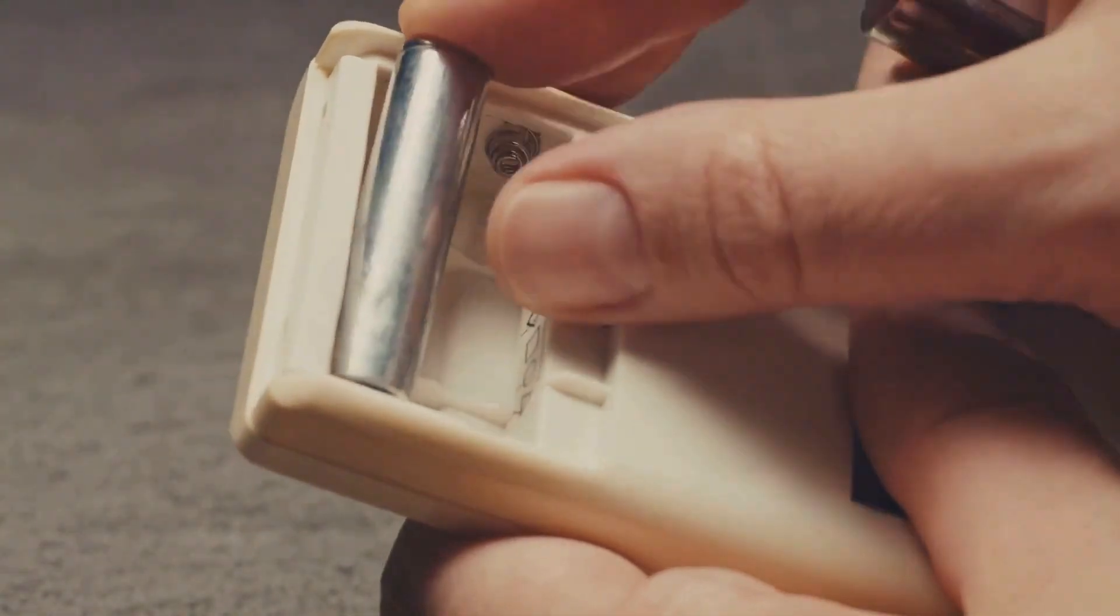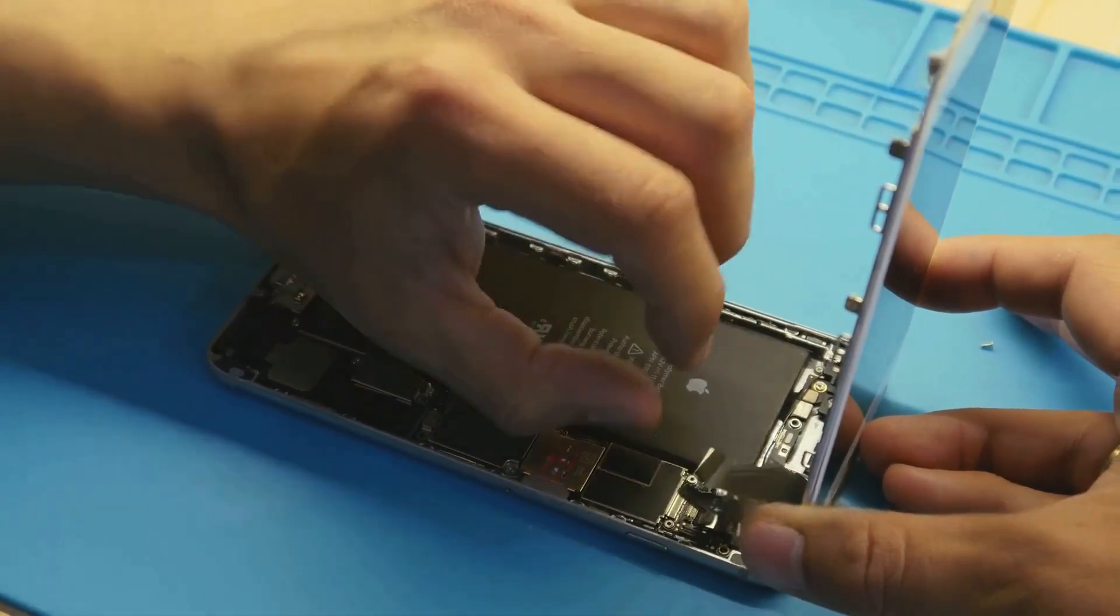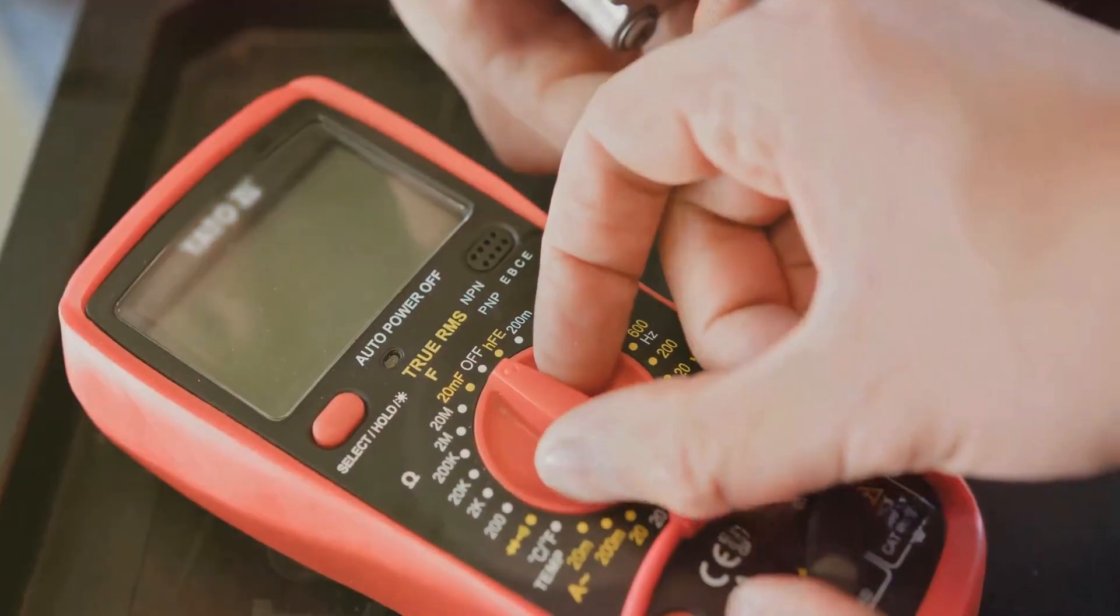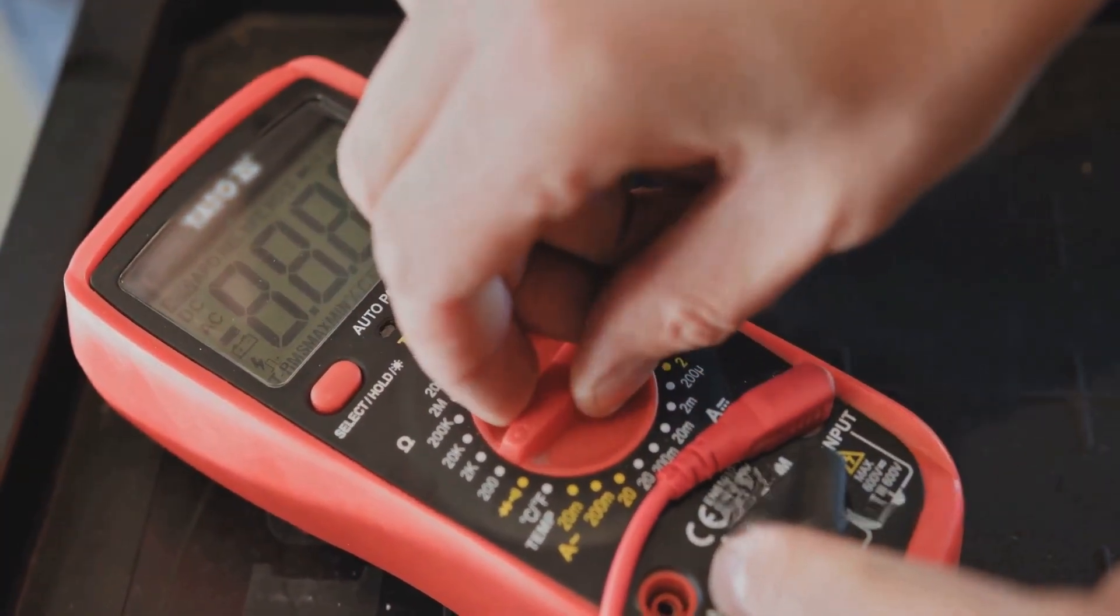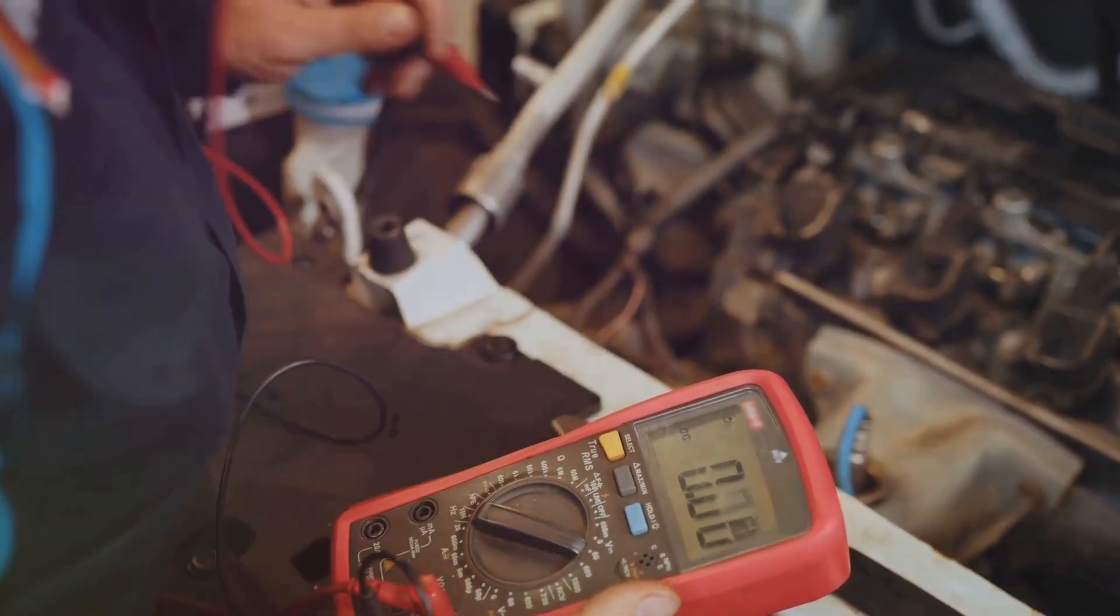Open the back cover of your multimeter and replace the old batteries with fresh ones. Make sure the new batteries are inserted correctly. Reassemble it and give it another go. Test it on a known voltage source to see if it's working. If it still doesn't read voltage, move on to step 2. Sometimes the issue is more than just the batteries.